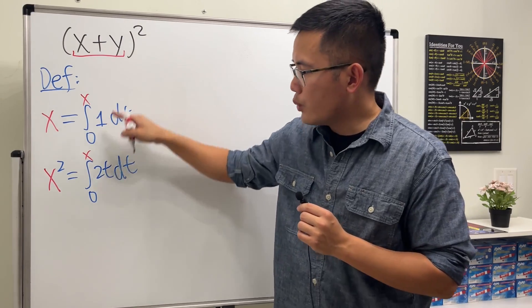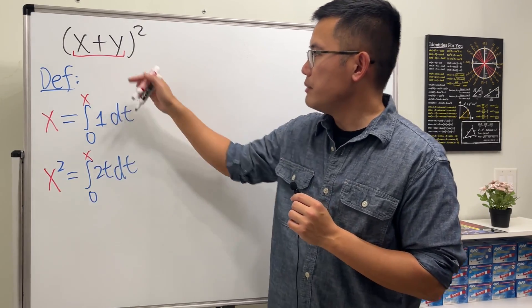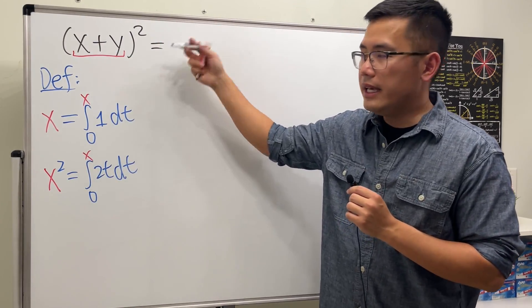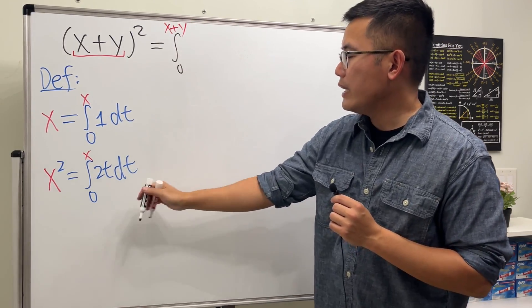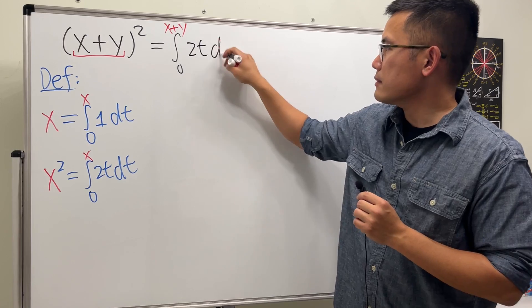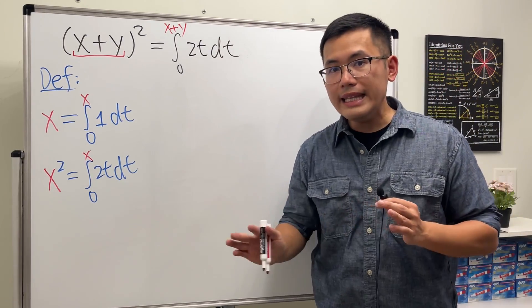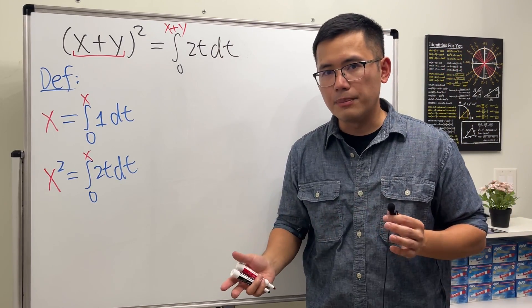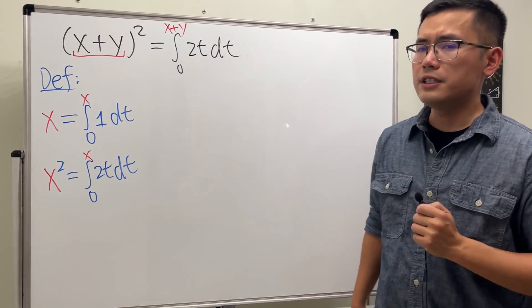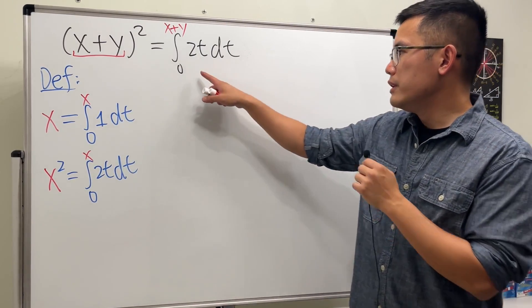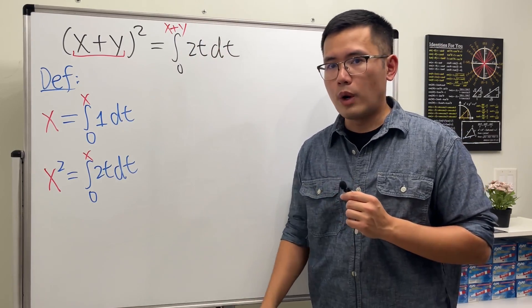Now we can only use these two definitions, and we see that here we have x plus y square, so we will use this definition. This means we have this being the integral going from 0 to x plus y, and then we have 2t dt. But here we cannot integrate and plug in because that defeats the purpose. We can only use the properties of integrals to take care of this.